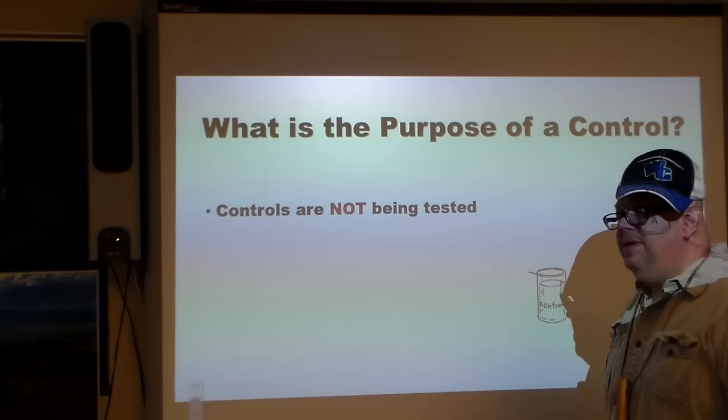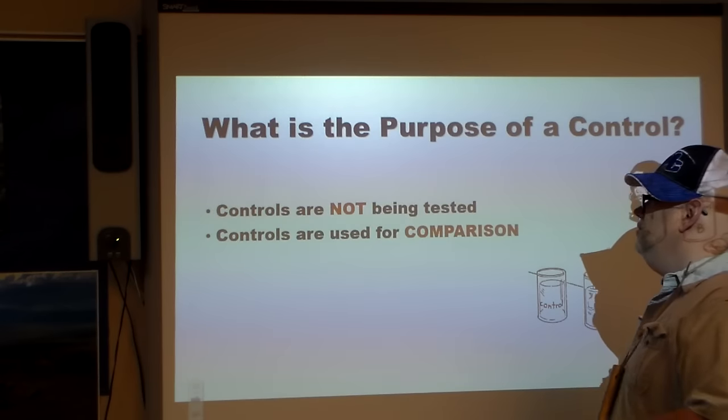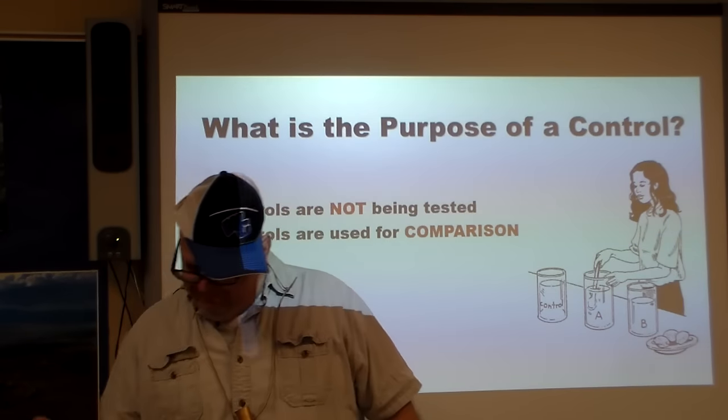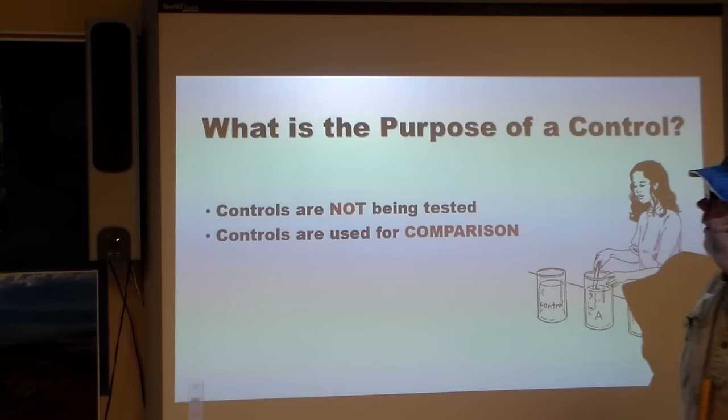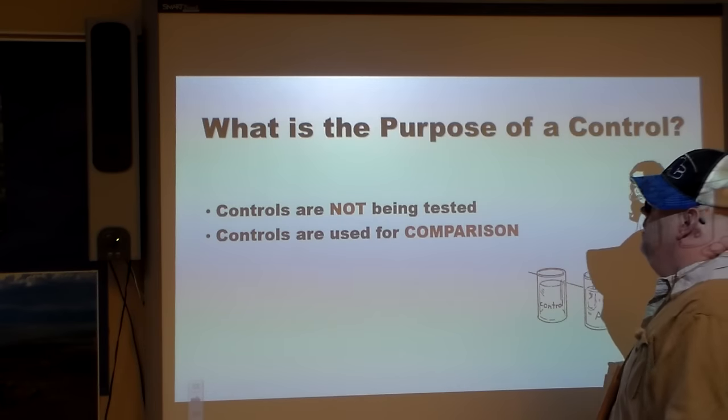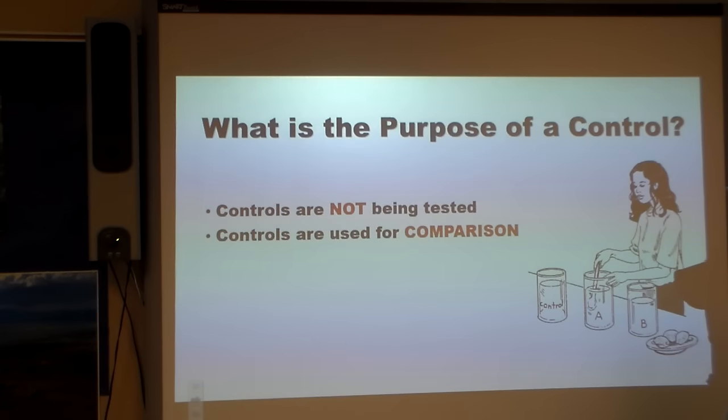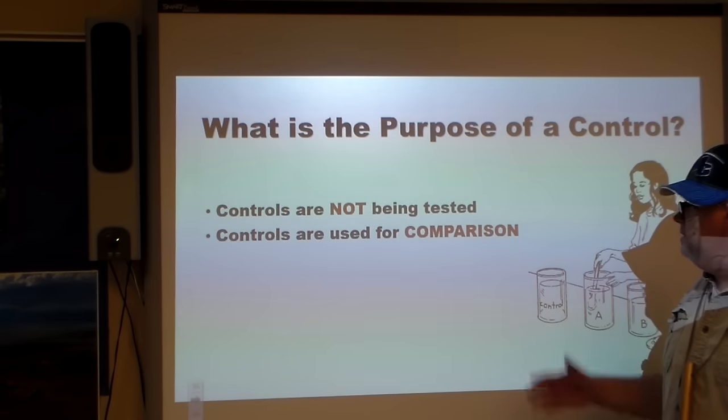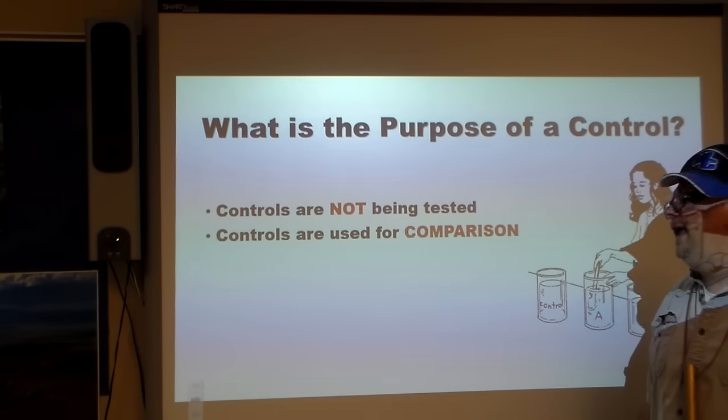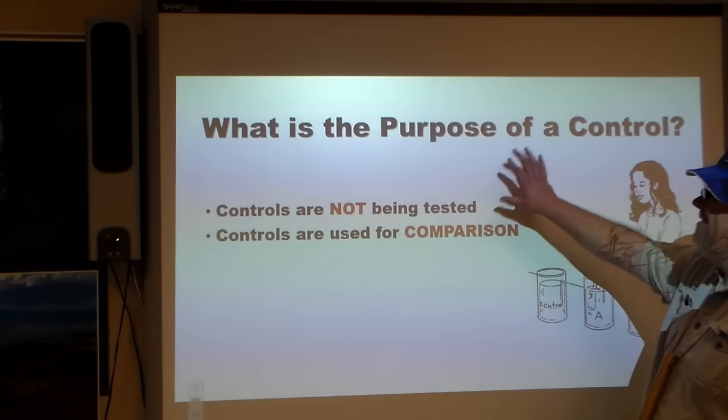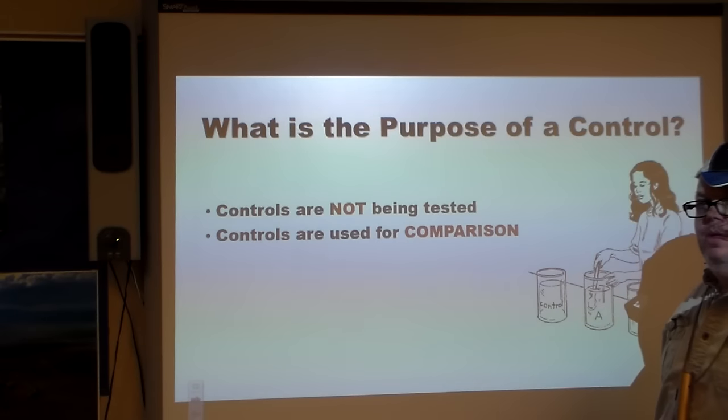So what's the purpose of a control? A control is not being tested. It is something that we use to compare what's going on. Controls are used for comparison. So for example, for our condensation experiment, we just have a glass that doesn't have any water in it. Let's see if there's any condensation that forms on that. That's a control. We just use that for comparison.